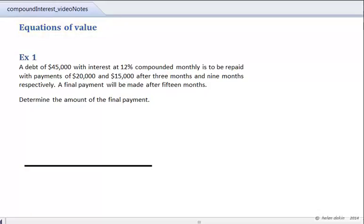Let's begin by clearly labeling our time diagram. We have on our timeline a debt of $45,000 with interest at 12% compounded monthly. So the debt of $45,000 we can assume is due today. And so we will make payments of $20,000 and $15,000 after 3 months and 9 months respectively. So that means that after 3 months we're going to be making a payment of $20,000.